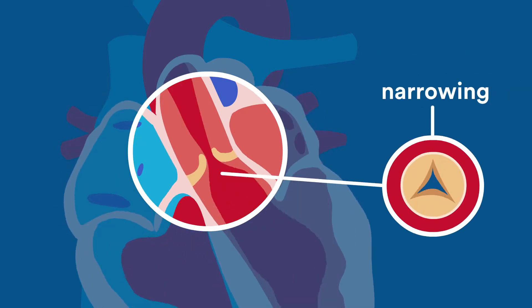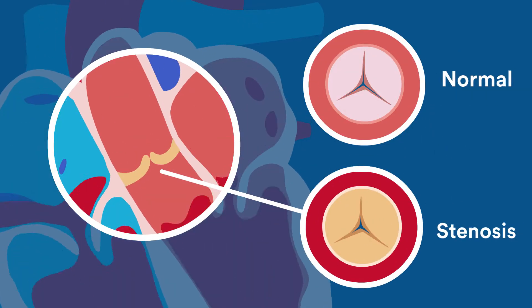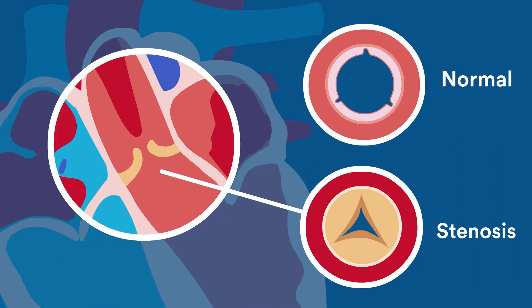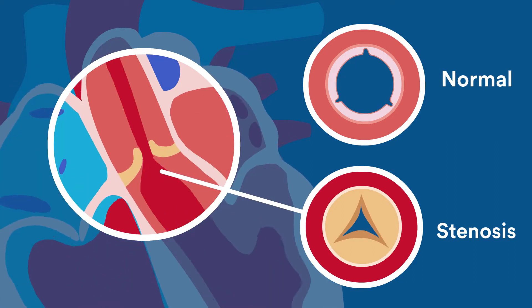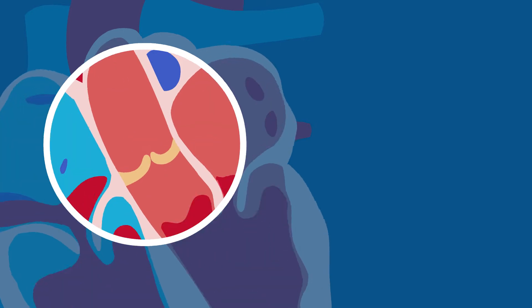Aortic valve stenosis is a narrowing of the aortic valve which can reduce or block blood flow from your heart into the main artery in your body, the aorta, and onward to the rest of the body.